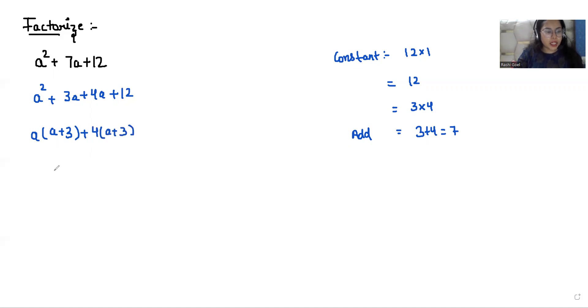Now from both brackets, (a + 3) is common. So what is left? In the next bracket, a + 4. The factorization of a² + 7a + 12 is (a + 3)(a + 4).